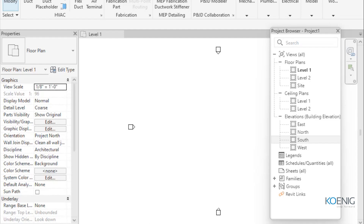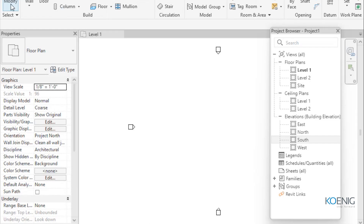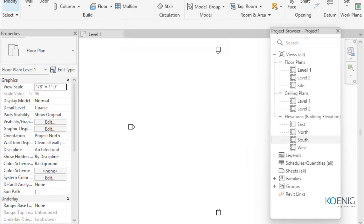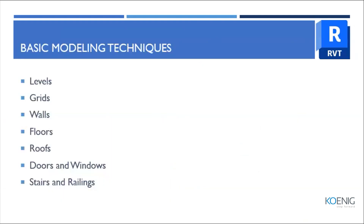Let's get started with the interface, concentrating on architecture. Going to the architecture tab, I'll show you some of the tools you can use for architectural design. We'll start with the core elements: levels and grids, then move towards walls, floors, roofs, doors and windows, stairs, and railings.